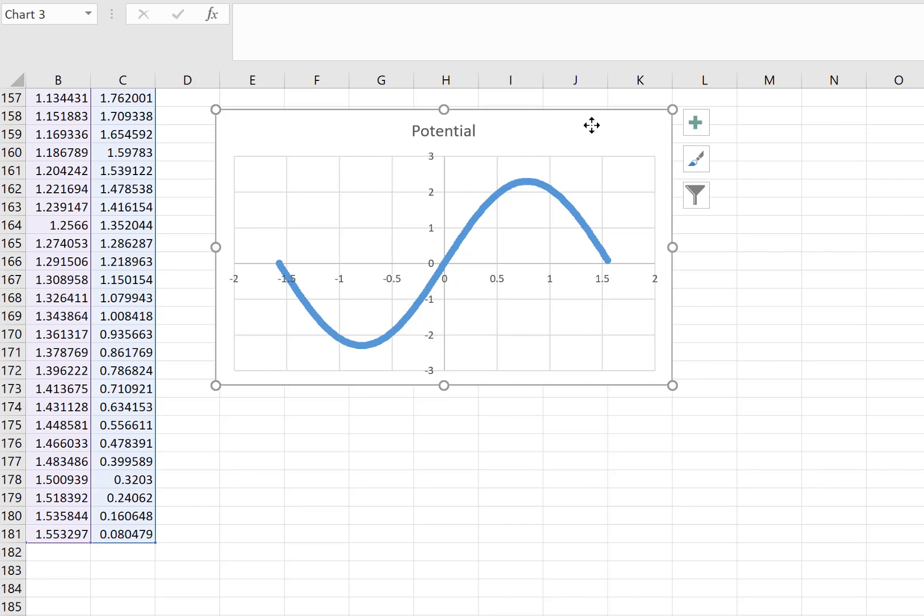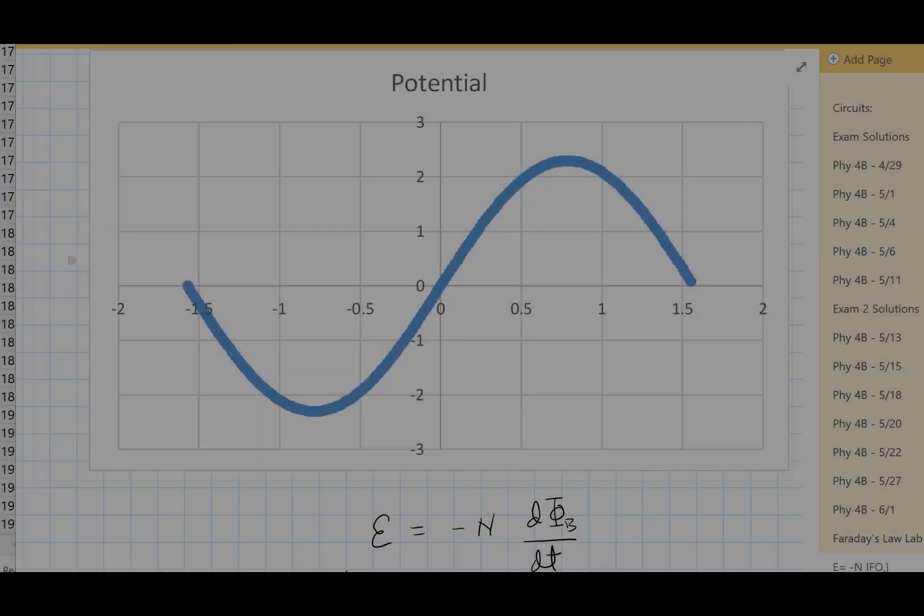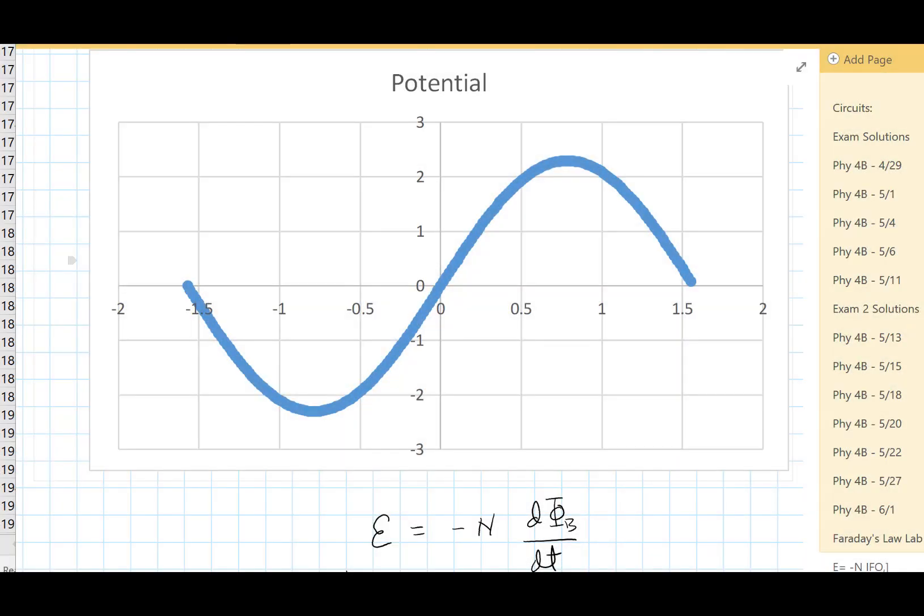Once you have that, you want to include one of the representative graphs in your write-up. This is Faraday's law and we're trying to show this relationship with the data we have from our dropped magnet through the coil of wire. The induced emf in the coil of wire should be proportional to how fast the magnetic flux is changing.